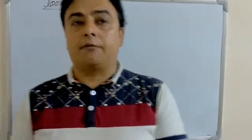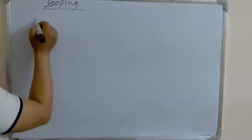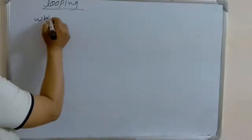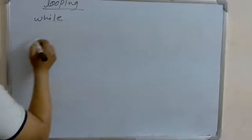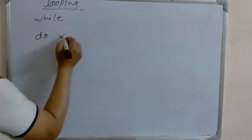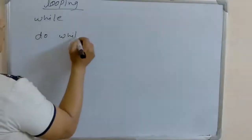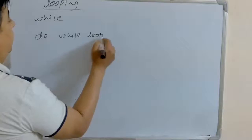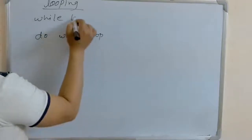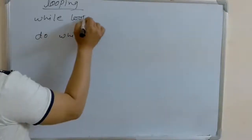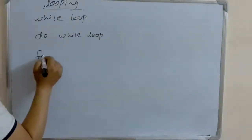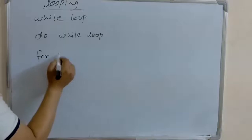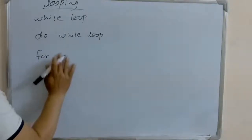There are three types of looping. They are: while loop, do-while loop, and for loop.